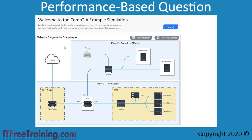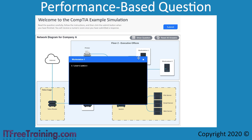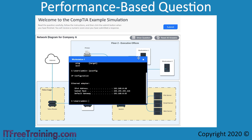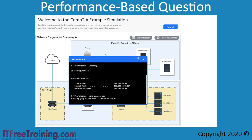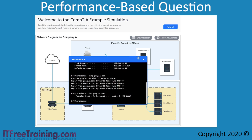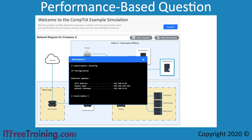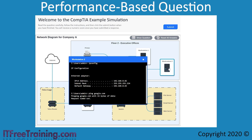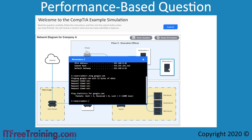Many interactive questions have areas you can click to access additional information or tools. Clicking on the workstation icon opens a command prompt. Entering 'help' shows available commands — note that simulations often have only a partial set of commands implemented. To start troubleshooting, I enter 'ipconfig' to get the network configuration, then attempt to ping Google. The ping returns a response from the first computer, confirming it can access the internet. On the second workstation, running the same ping command receives no response — this is the computer having internet problems.